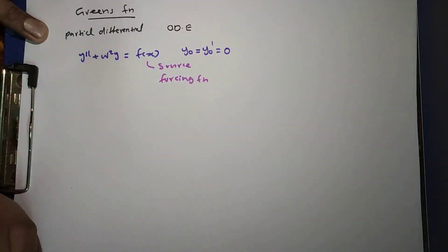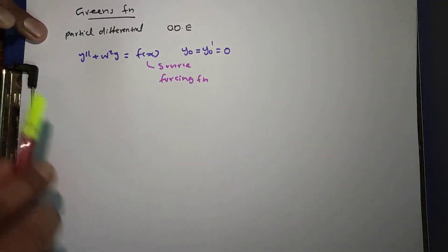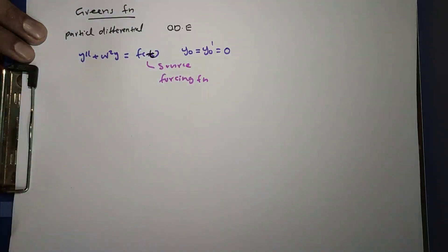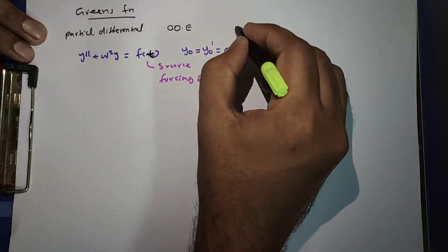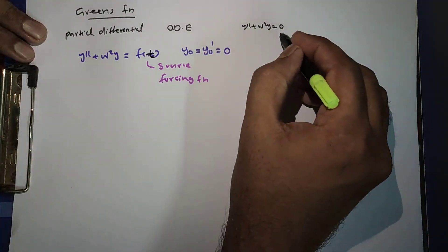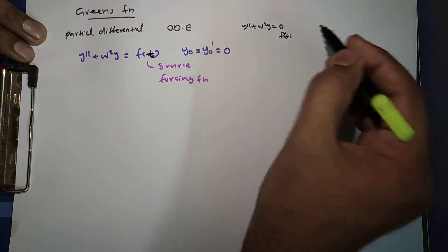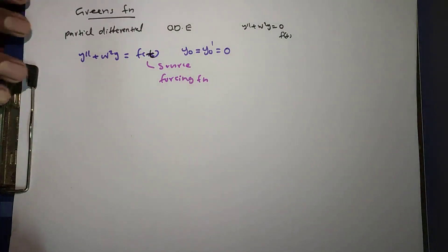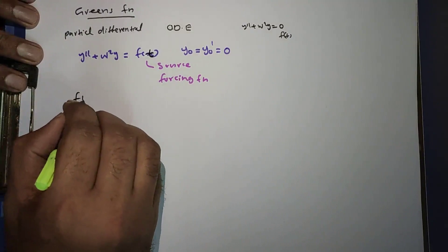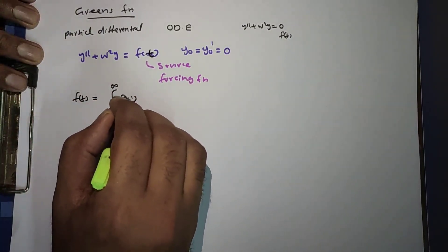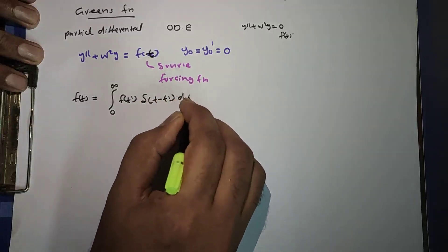So let us take this forcing function as a function of time, f of t. The equation becomes y double prime plus omega squared y is equal to f of t. For comparison, the harmonic oscillation equation is y double prime plus omega squared y equals zero. The force term f of t is the forcing function or source function. You can write f of t as the integral from 0 to infinity of f of t prime, delta of t minus t prime, dt prime.